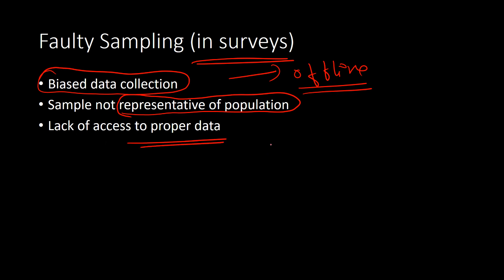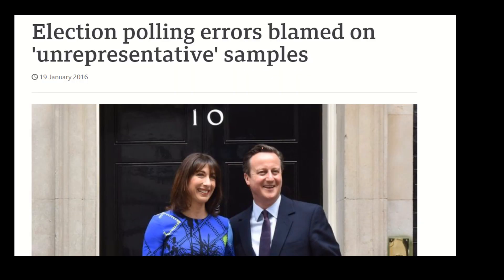If the sample is not representative, you cannot infer anything from the analysis for the population. Lack of access to proper data is another problem in offline data collection, though online collection is somewhat easier now with social media and digital media. It's very important to understand where exactly we face such issues. One such example is election forecasting.